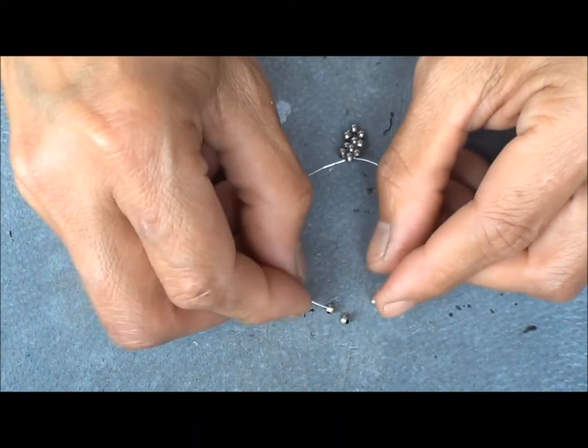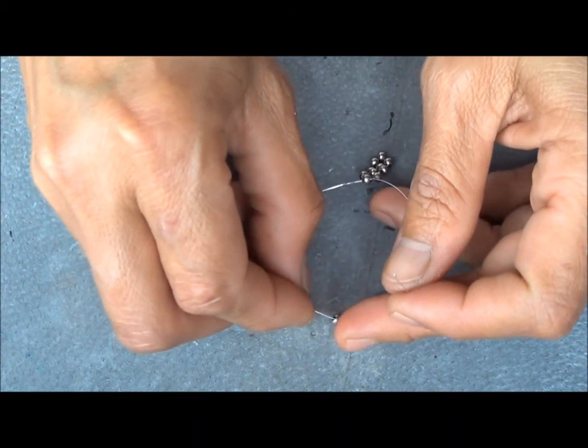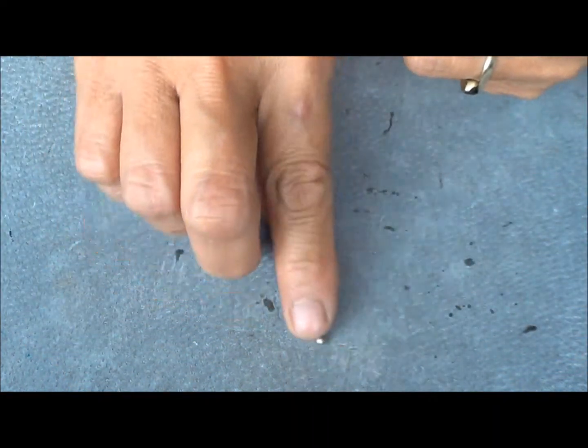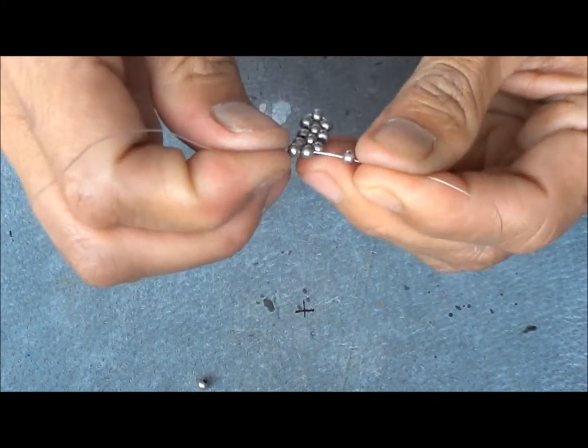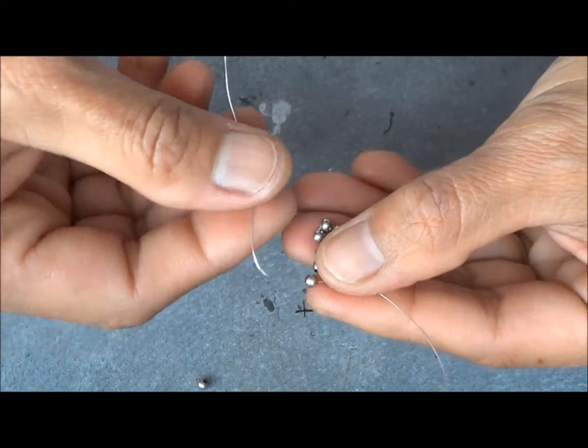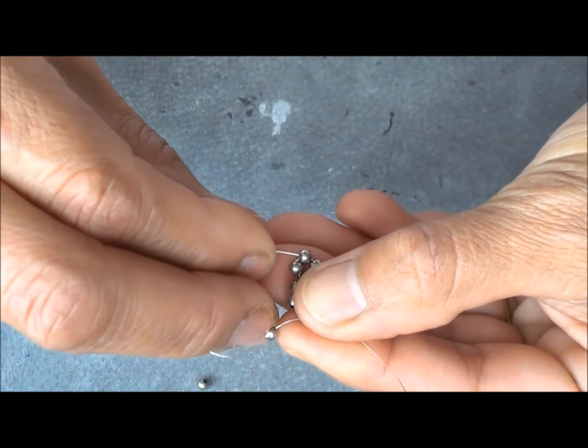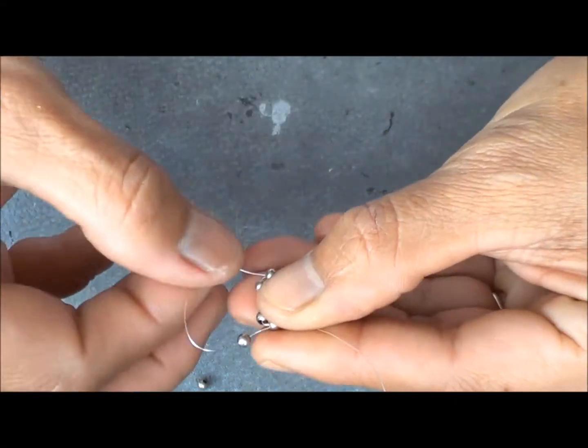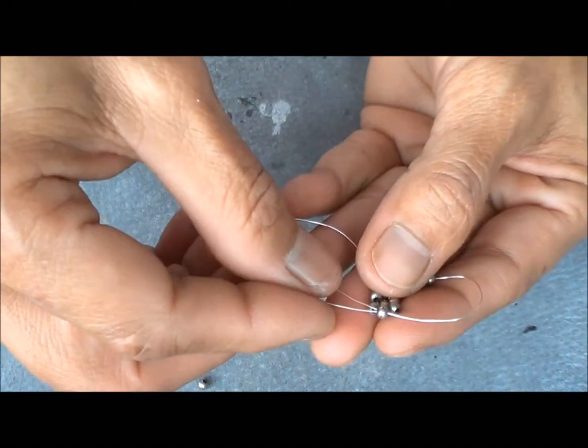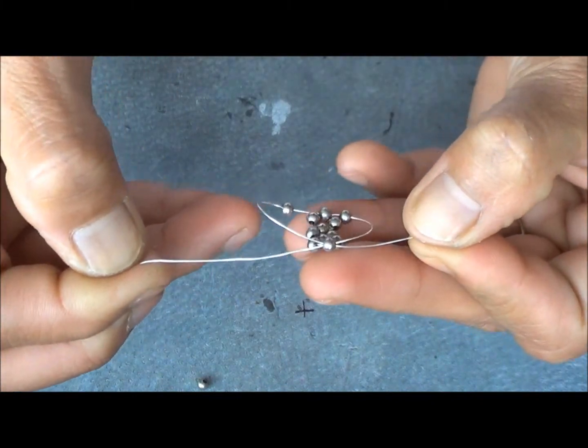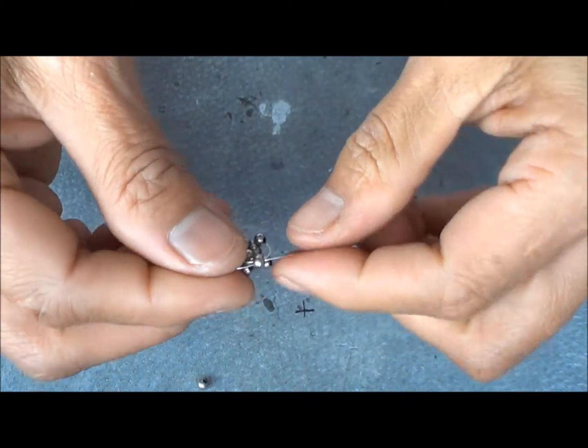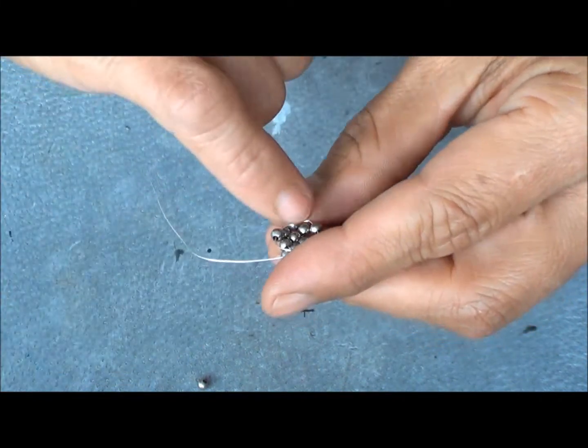Then we'll do number eleven and twelve. So we got twelve beads now. Number thirteen, we'll put that aside for now. Now I'm going to join it to number one bead. I'm going to put my wire through crossing over again the two ends of the wire. Just turn it around, cross it over and I'll pull. Just press that in the middle.